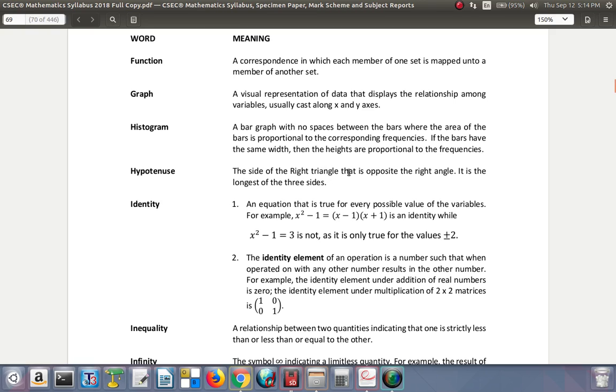Hypotenuse: the side of the right angle triangle that is opposite the right angle. It is the longest of the three sides. The hypotenuse is that side that is opposite to the right angle. It doesn't brush against the side of the right angle, so it doesn't come near to it like the other two sides.